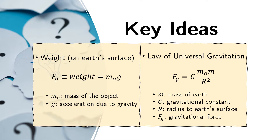Let us review the following concepts. First is the idea of the acceleration due to gravity. The lowercase g is tightly related to the concept of weight. Weight is defined as the force experienced by an object due to the pull of the Earth's gravity. From Newton's second law, that force must be equal to the mass of the object times the acceleration due to that gravitational force, which is what we denote as g.